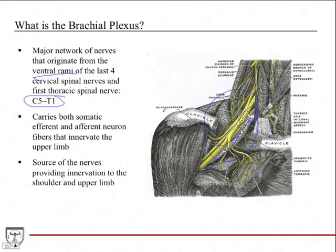These nerves carry both somatic efferent — motor innervation to the shoulder and upper extremity — and afferent neuron fibers, so sensory information from the shoulder and the upper limb to the spinal cord and brain. The big thing to know is that the brachial plexus is the source of nerves that provide the majority of innervation to the shoulder and all the innervation to the upper limb.